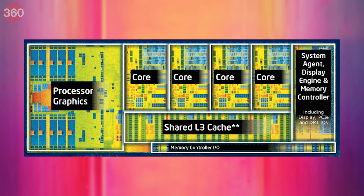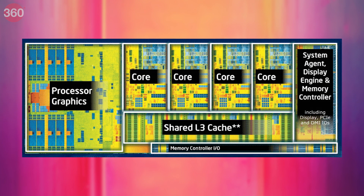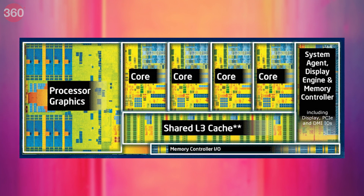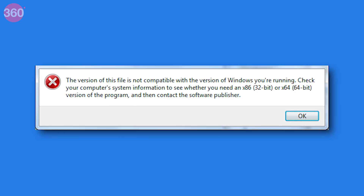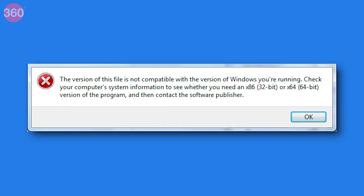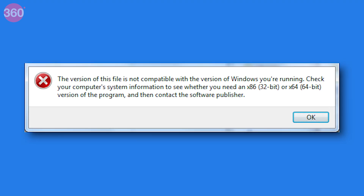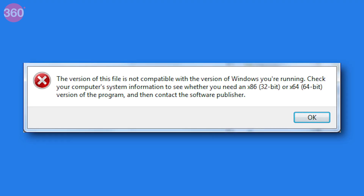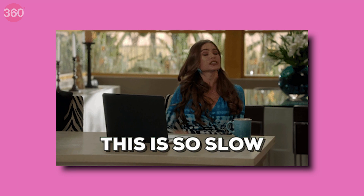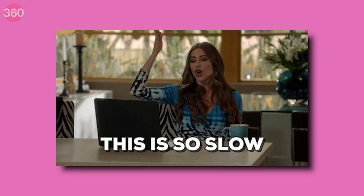Modern CPUs try to split the workload of a program among different cores for better efficiency, which doesn't quite work for older programs. They won't crash instantly, but they would just run really, really slow.